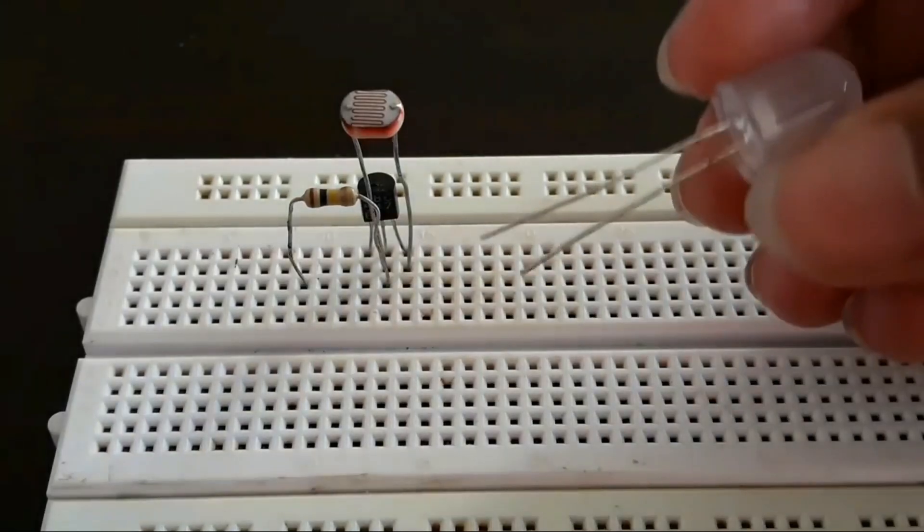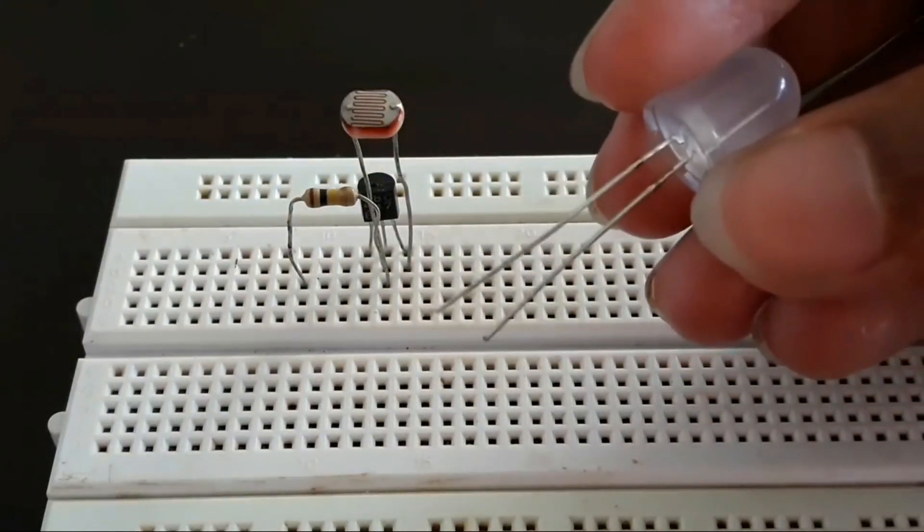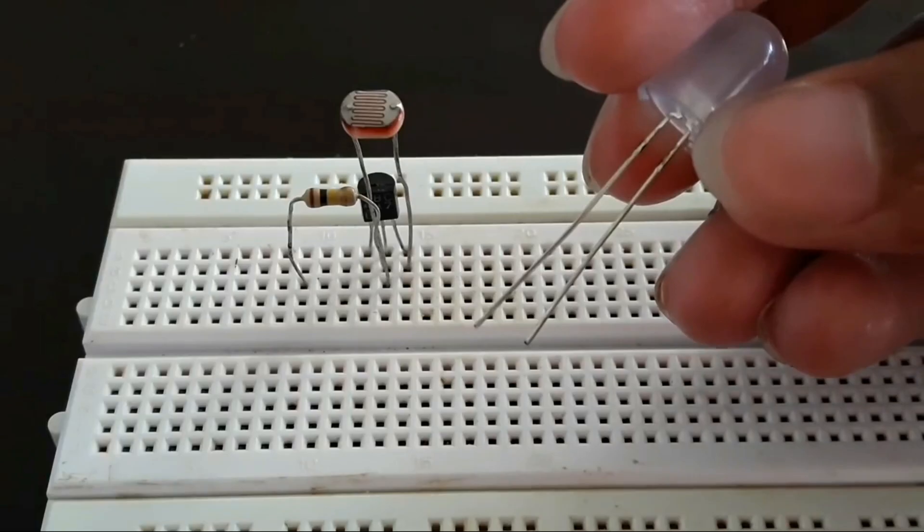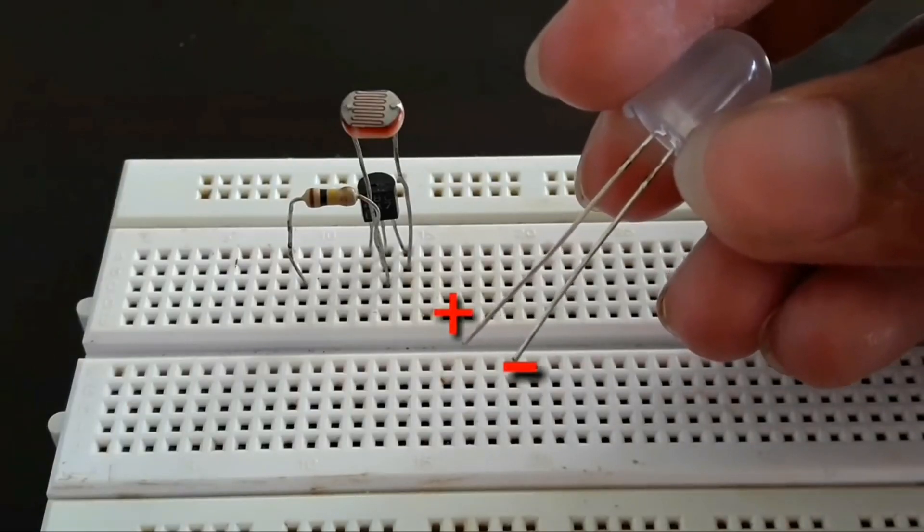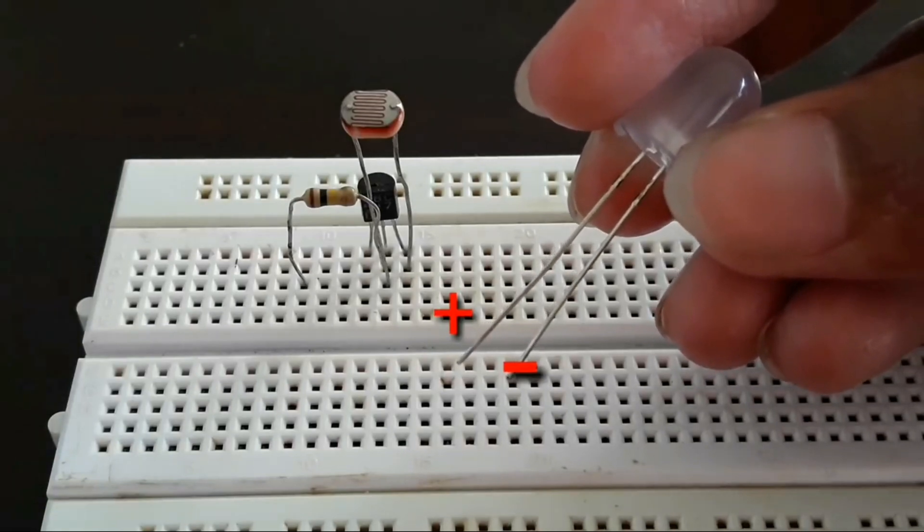Now let's connect the LED. The LED has one longer pin and one shorter pin. The longer pin is called the anode, that is the positive side, and the shorter pin is called the cathode, that is the negative side.